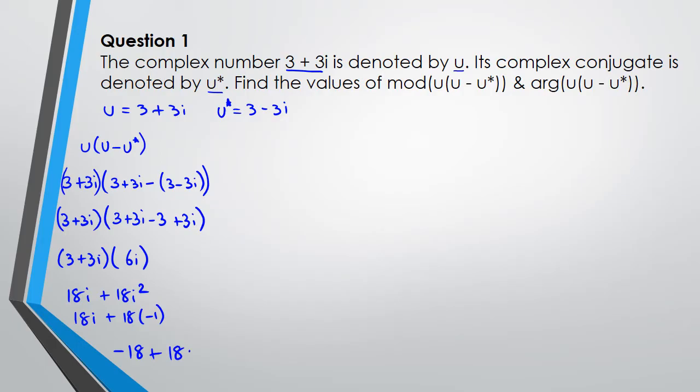And this could be written as 18i plus 18 times negative 1, so our complex number is negative 18 plus 18i. So we need to figure out what the modulus is and the argument.